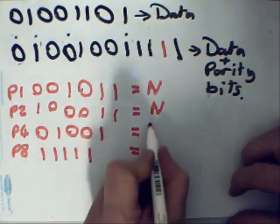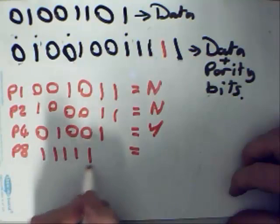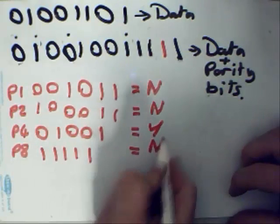1, 2, great, parity matches. 1, 2, 3, 4, 5, odd number again so the parity is not correct.